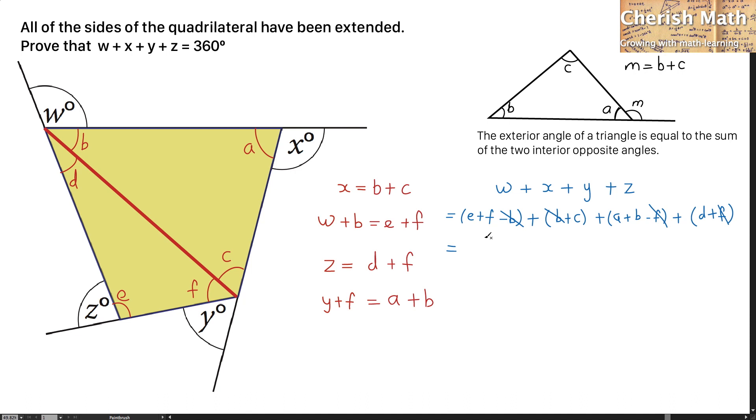We arrange all the letters in order. That would be A plus B plus C plus D plus E plus F. Looking at the sum of all these letters, that shows it is the sum of the interior angles of this entire quadrilateral.